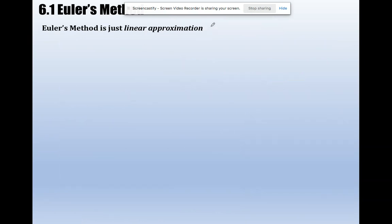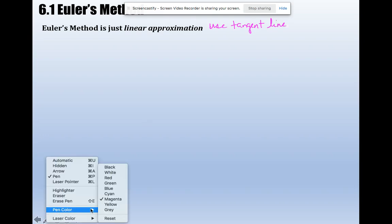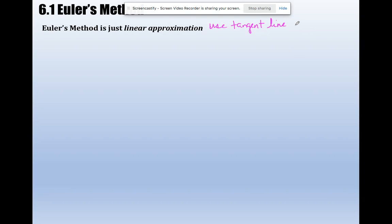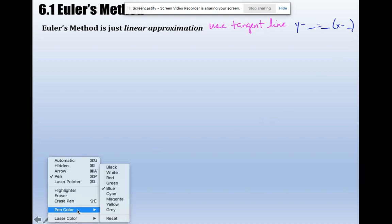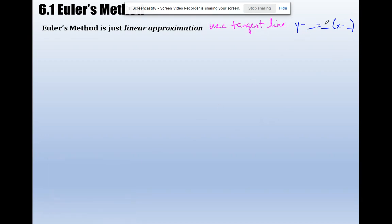It is just a linear approximation, which means Euler's method uses the tangent line, something we did first semester. Remember, the equation of any tangent line looks like this, where the slope goes here, but you get the slope from the derivative, and this is your point of tangency.